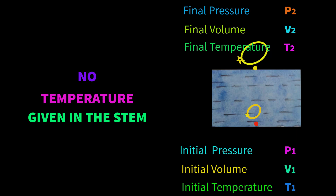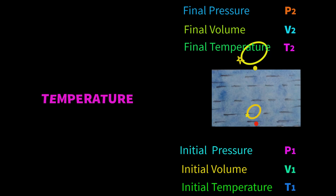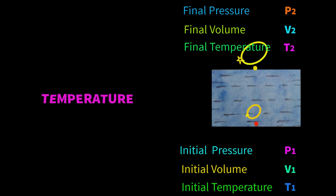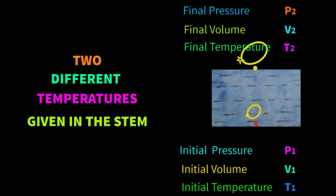Remember, if we do not get any temperature given in the stem, we will always consider temperature as constant, as the temperature of air and water are the same. This is why temperature is often not mentioned in the stem. Again, if we get only one temperature given in the stem, we can still assume the temperature of water and air are exactly the same. We know that temperature is constant for Boyle's formula, so in these two cases we will apply Boyle's formula. But if we get two different temperatures given in the stem, we will treat temperature as a variable.